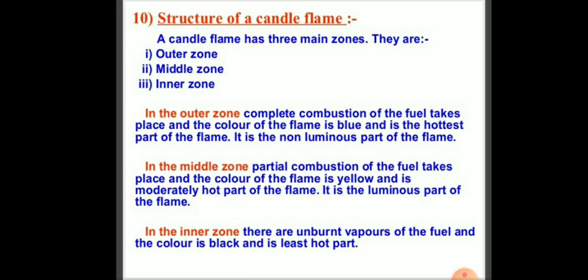To summarize the candle flame structure: the outer zone has complete combustion, a blue flame, is the hottest part, and is the non-luminous part. The middle zone has partial combustion, a yellow flame, is moderately hot, and is the luminous part. The inner zone has unburnt vapors of the fuel, is black in color, and is the least hot part.